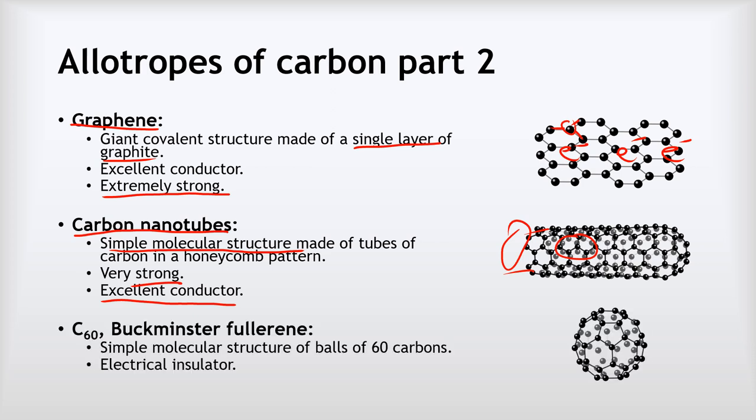And our last allotrope of carbon is C60, also known as Buckminster Fullerene. Now what this is, this is a simple molecular structure made of balls of exactly 60 carbons arranged like that. They're arranged in the exact same way that the hexagons and pentagons are on a lot of footballs.